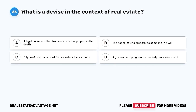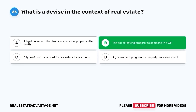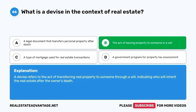Question 66. What is a devise in the context of real estate? A. A legal document that transfers personal property after death. B. The act of leaving property to someone in a will. C. A type of mortgage used for real estate transactions. D. A government program for property tax assessment. The correct answer is B. The act of leaving property to someone in a will. A devise refers to the act of transferring real property to someone through a will, indicating who will inherit the real estate after the owner's death.